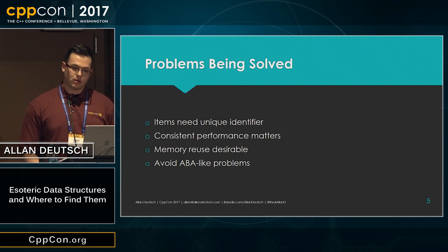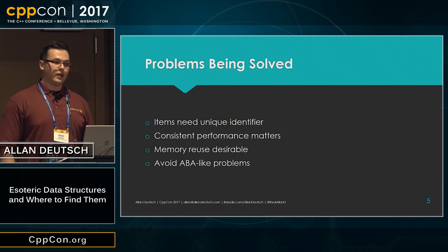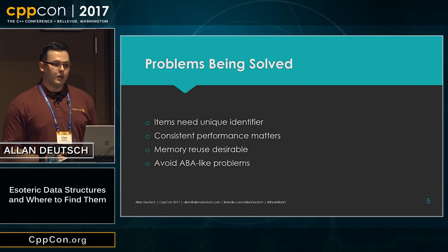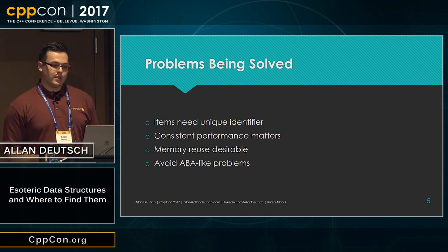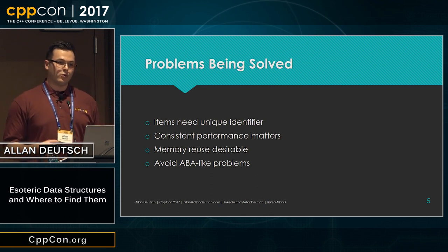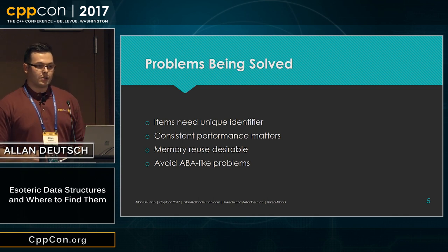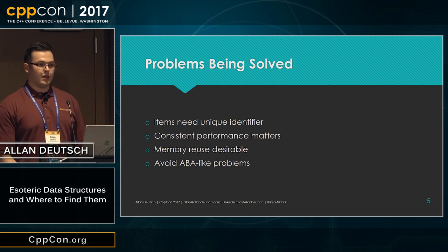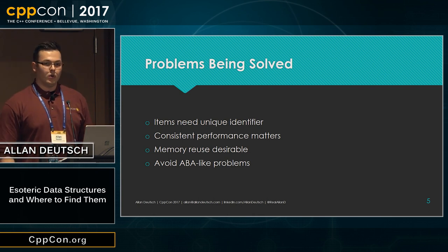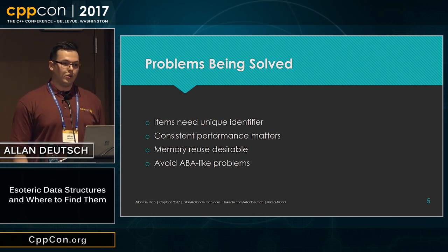Another nice feature of slot maps is that they avoid ABA-like problems, which is where you have some data that you've put in and have a key for, and then later on somewhere else in the code that element gets deleted, something else gets put in with the same key, and then you have the old key trying to access it. Slot map uses a generation counter mechanic to avoid that problem, so new keys that get handed out will not incorrectly get old data.